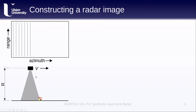We have our sensor flying at a height r and moving at a speed v, creating a beam shown by the grey outline here. When the satellite gets the return from the ground, we'll see a signal from the house because it falls within the beam. The width of this signal is going to be determined by the range resolution.